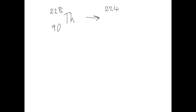And then the proton number — because 2 have been lost, remember the proton number is the same as the atomic number, which is the bottom number — will have gone down by 2, so that's 88. This element will now be a new element because the atomic number has changed, and it's radon. You complete it by writing the alpha mass and proton number there. Remember, alpha is a helium nucleus.